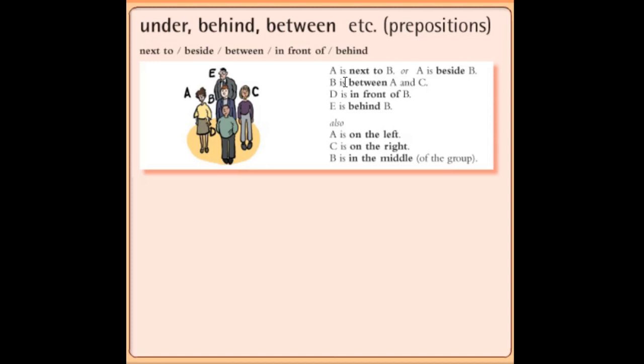So first of all, A is next to B. 'Next' means beside, meaning the person ahead or next person. A is beside B, meaning A is on the side of B. B is between A and C. So B is between A and C, meaning B is in the middle between A or C, to the left or right between them.